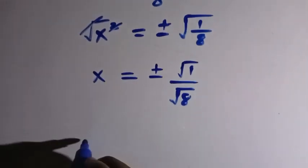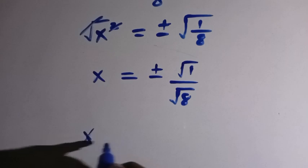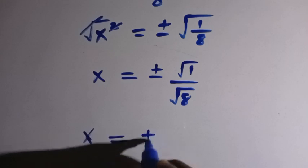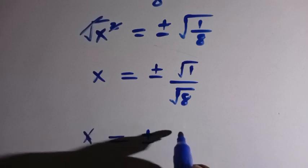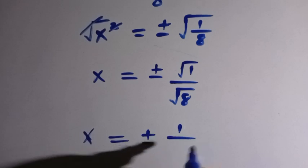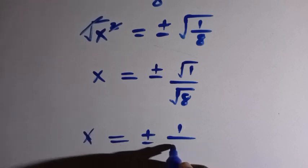Then from here, we have our x equals plus or minus. So square root of 1 is 1 divided by the square root of 8.